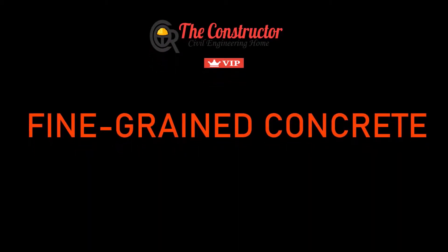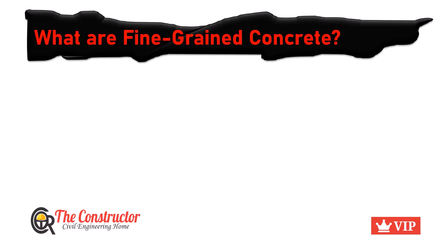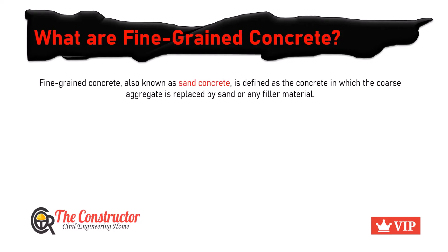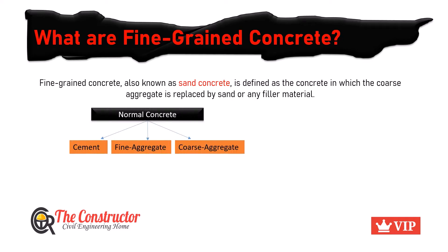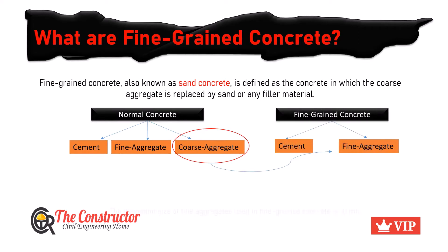Welcome to the Constructor. Today we will discuss what fine grain concrete is. Fine grain concrete, also known as sand concrete, is defined as a concrete in which the coarse aggregate is replaced by sand or any filler material. The maximum size of fine aggregate used in fine grain concrete is 10 mm.